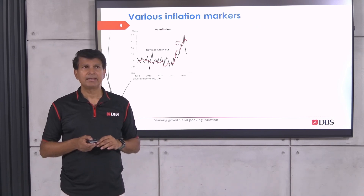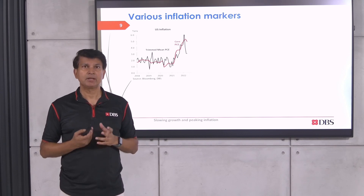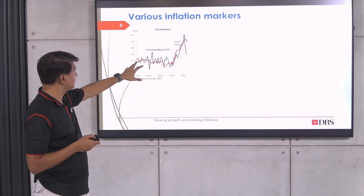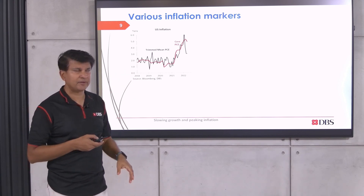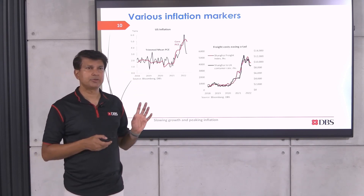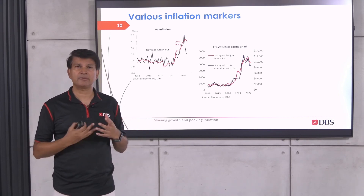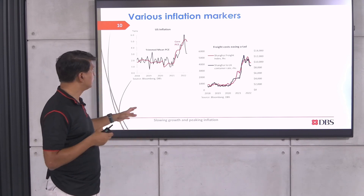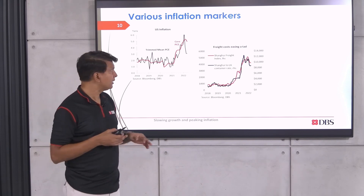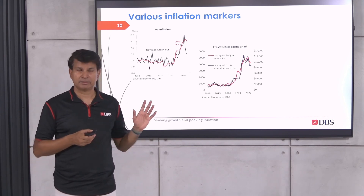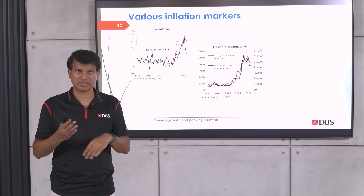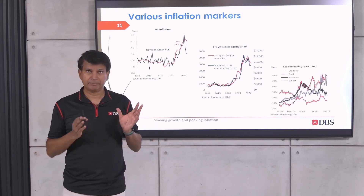Turning to key inflation markers: core PCE inflation in the US and the Dallas Fed's trimmed mean PCE have both come down quite a bit after peaking in March of this year. Freight costs are another key marker — moving a container from Shanghai to LA was costing around $12,000 in late 2021; it's now about $9,000. While not great — ideally it would be $2,000 — it has come down. Inflation at the end of the day is about the change in prices, not the level, so this will help matters.